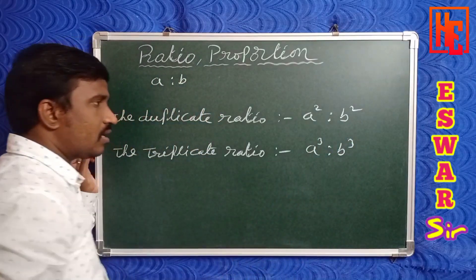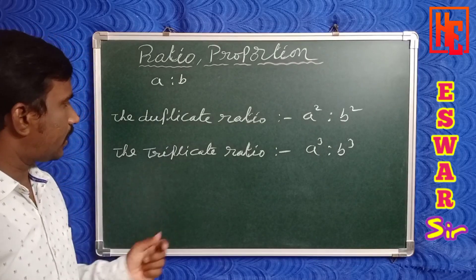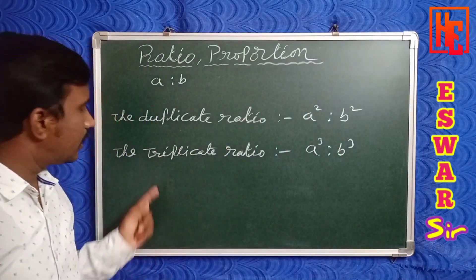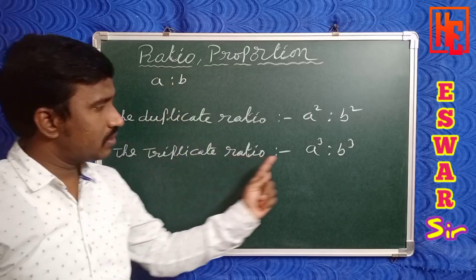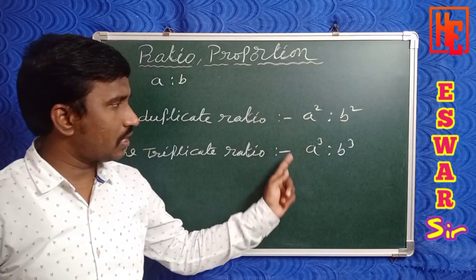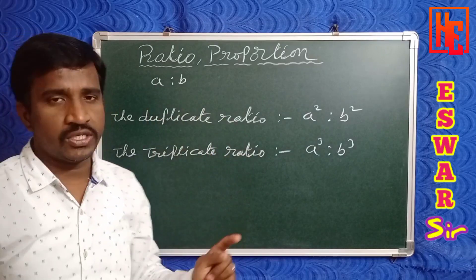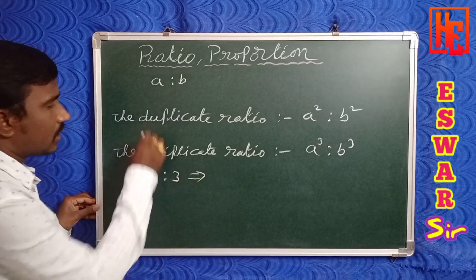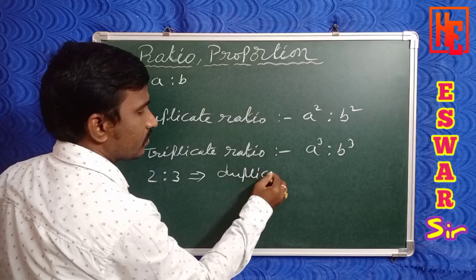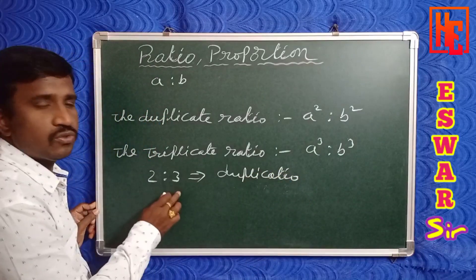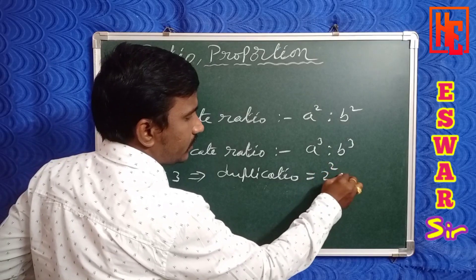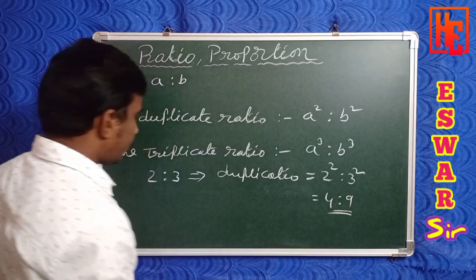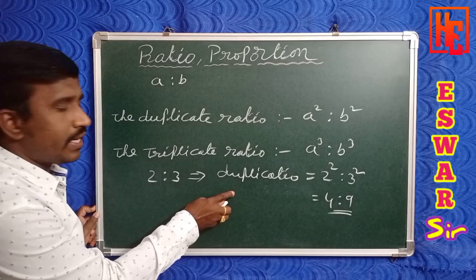So the duplicate ratio of a is to b is a squared is to b squared, and the triplicate ratio of a is to b is a cubed is to b cubed. For example, take 2 is to 3. The duplicate ratio of 2 is to 3 means 2 squared is to 3 squared — 2 squared is 4, 3 squared is 9 — so 4 is to 9 is the duplicate ratio of 2 is to 3.